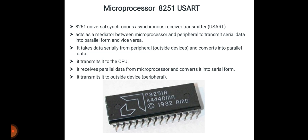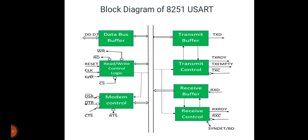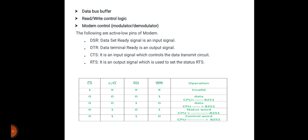The block diagram of 8251 USART consists of 7 blocks: data bus buffer, read/write control, modem control, transmit buffer, transmit control, receive buffer, and receive control. The data bus buffer block helps in interfacing the internal data bus of the 8251 to the system data bus, enabling data bus transmission between 8251 and the CPU. The read/write control logic is a control block for the overall device.